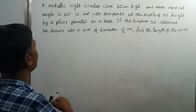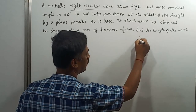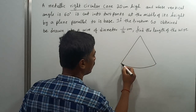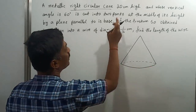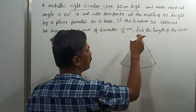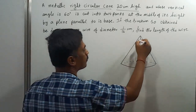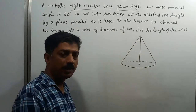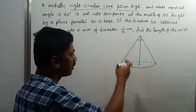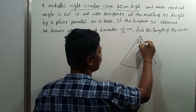Now they are talking of a right circular cone. So you can consider this as a right circular cone. They said that its height is 20 centimeters and the vertical angle is 60 degrees. If it is a right circular cone and the vertical angle is 60 degrees, then the height bisects the vertical angle.